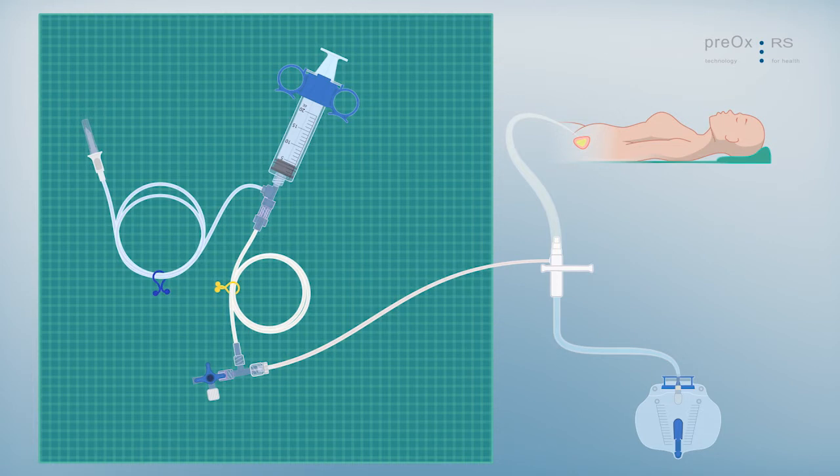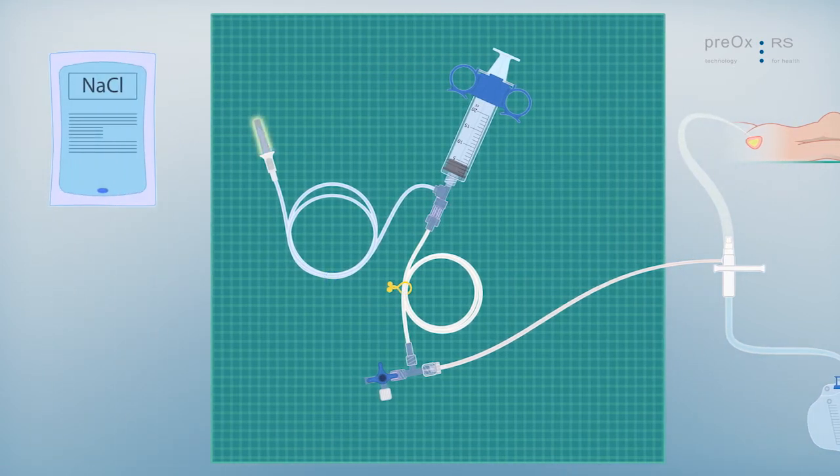Remove the blue clip. Subtract the cap from the spike and prick in the saline bag.